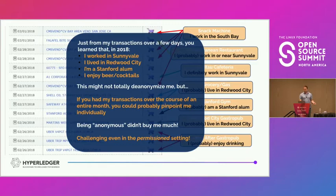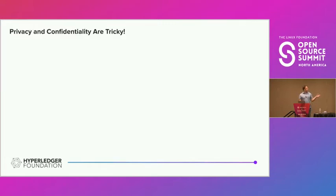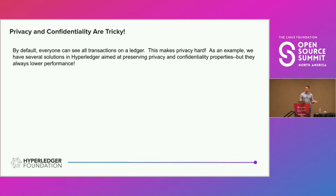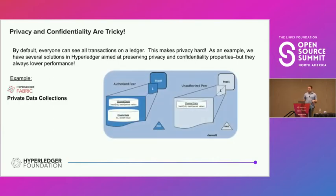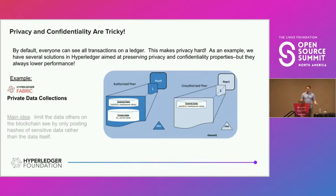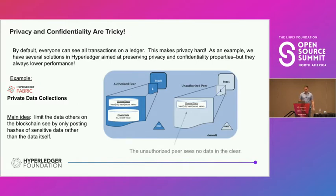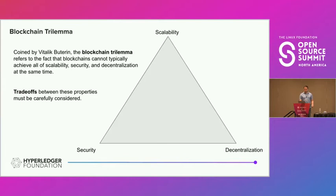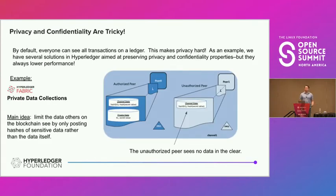This doesn't totally de-anonymize me, but over a whole month or months you could probably completely figure things out — being anonymous didn't really buy me much. This is challenging even in the permissioned setting. Privacy and confidentiality are tricky. Solutions exist, such as Fabric private data collections, which limit what others see on the blockchain by posting hashes rather than the data itself, but this comes at a performance cost.